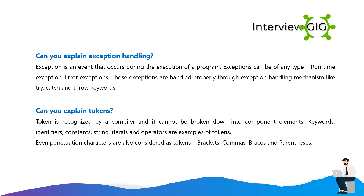Can you explain exception handling? Exception is an event that occurs during the execution of a program. Exceptions can be of any type: runtime exception, error exceptions. Those exceptions are handled properly through exception handling mechanisms like try, catch and throw keywords. Can you explain tokens? A token is recognized by a compiler and it cannot be broken down into component elements. Keywords, identifiers, constants, string literals and operators are examples of tokens. Even punctuation characters are also considered as tokens: brackets, commas, braces and parentheses.